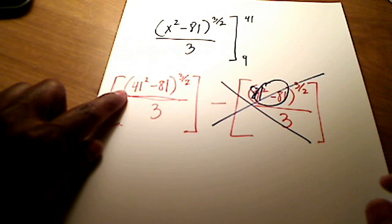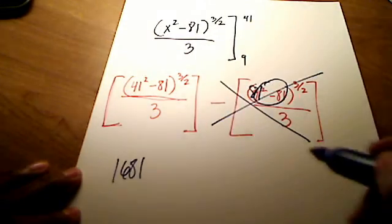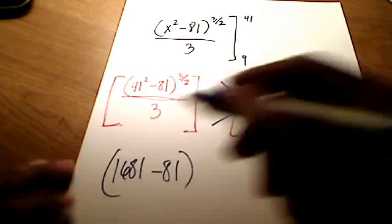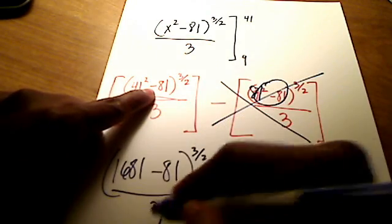So let's go work on this part. Let's see. 41 squared. If you do that on your calculator, you'll see 41 squared is 1681. Alright. Minus 81. Alright. And then that quantity raised to the 3 halves all over 3.